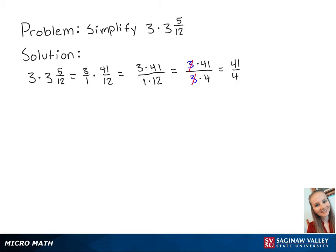Finally, we need to convert the fraction back into a mixed number. 4 goes into 41 10 times with one part left over. So this is equal to 10 and 1 fourth. And this is the final answer.